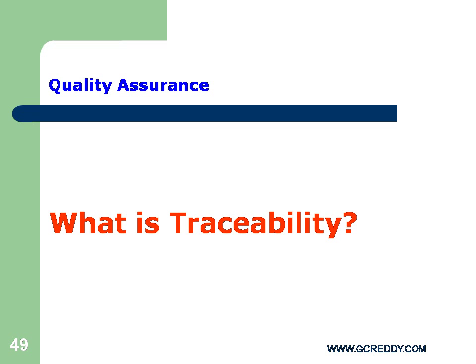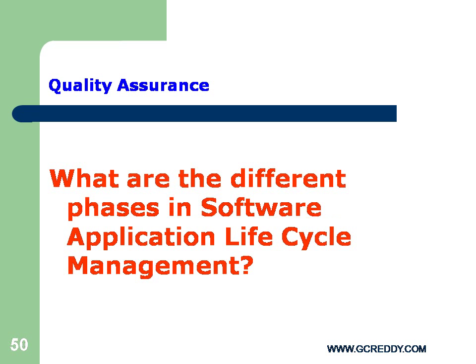What are the different phases in Software Application Life Cycle Management? 1. Development Phase, 2. Testing Phase, 3. Production Phase.